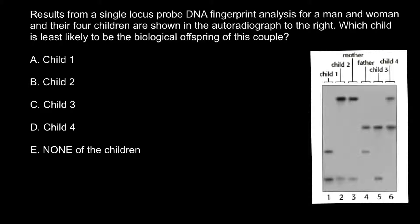About 30 years ago, paternity tests were not as exact as today. Basically, they could only confirm that you are NOT a father, not that you ARE a father. For example, in the ABO blood group system, if you belong to blood group O, your genotype is OO. If the mother is also blood group O but the child is blood group A, this would exclude you as a father — it is impossible for two blood group O parents to have a blood group A child.